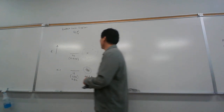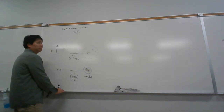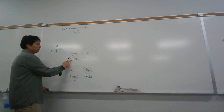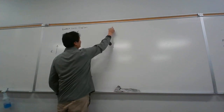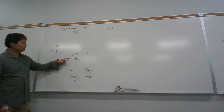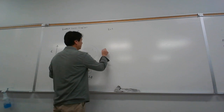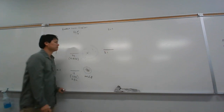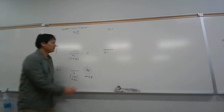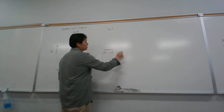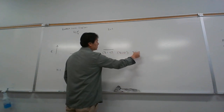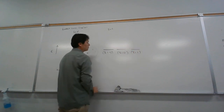If l equals 0 we also have l equals 1 as another possible value when n equals 2. So we get 2, 1. If l equals 1, the possible m values range from minus l to plus l, so minus 1 through 0 to plus 1. That gives us 2,1,-1 and 2,1,0 and 2,1,+1. So that gives us a total of three orbitals.